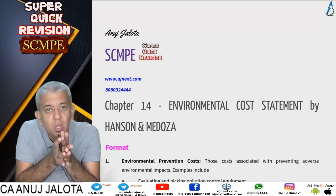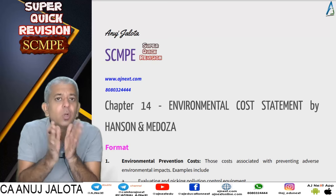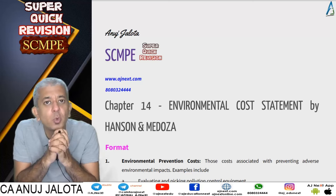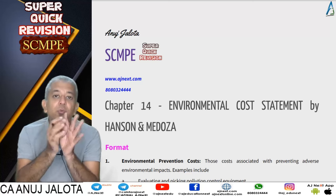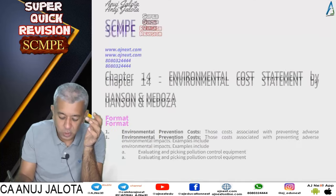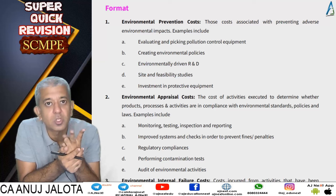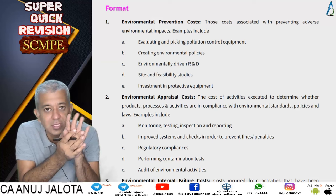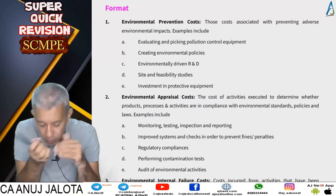Hansen and Meadows made a format whereby all the costs incurred on the environment, whether good or bad, should be reported separately. They said there will be four heads under which you are going to be reporting all your costs. These four heads are similar to the four heads we have done under the chapter of Total Quality Management: prevention cost, appraisal cost, internal failure cost, and external failure cost.